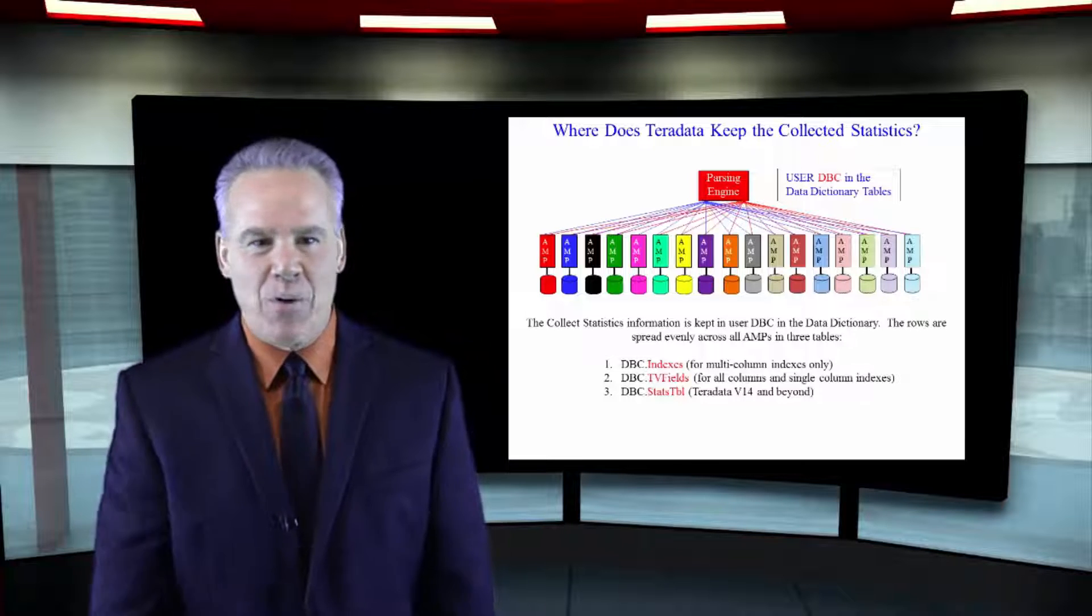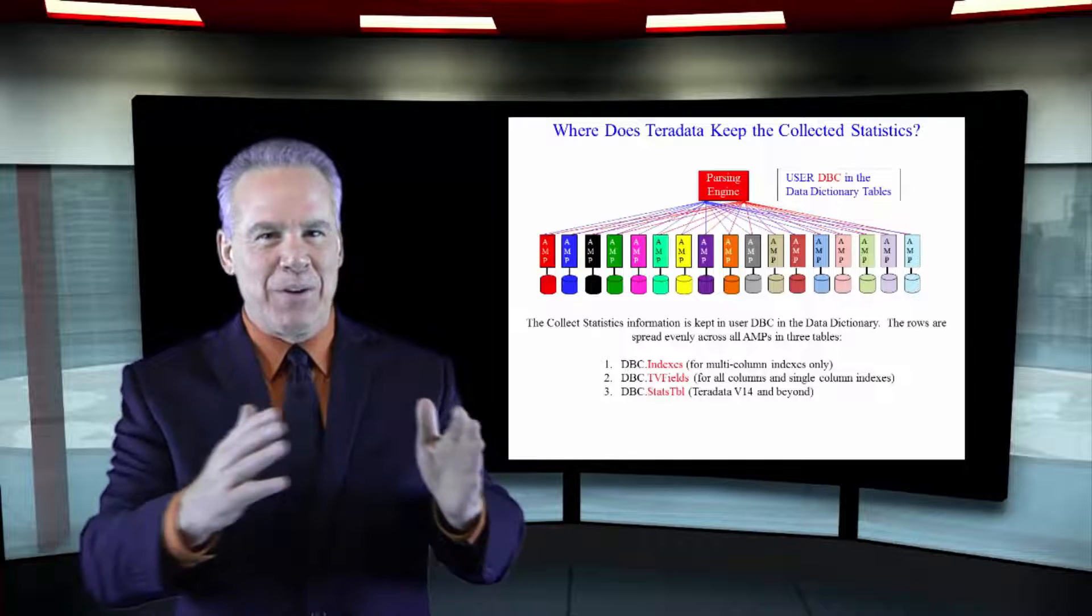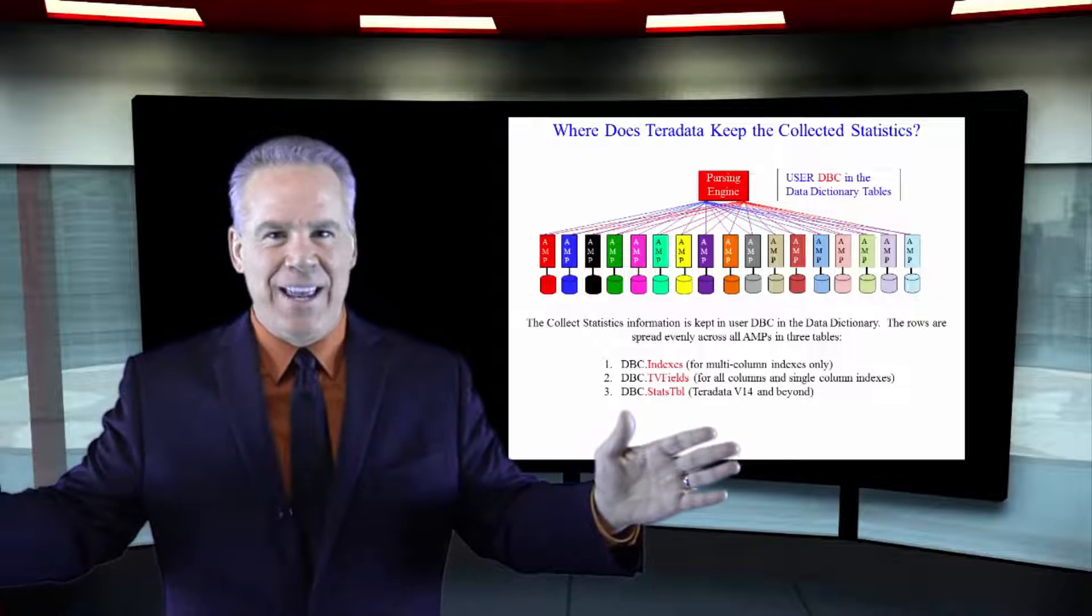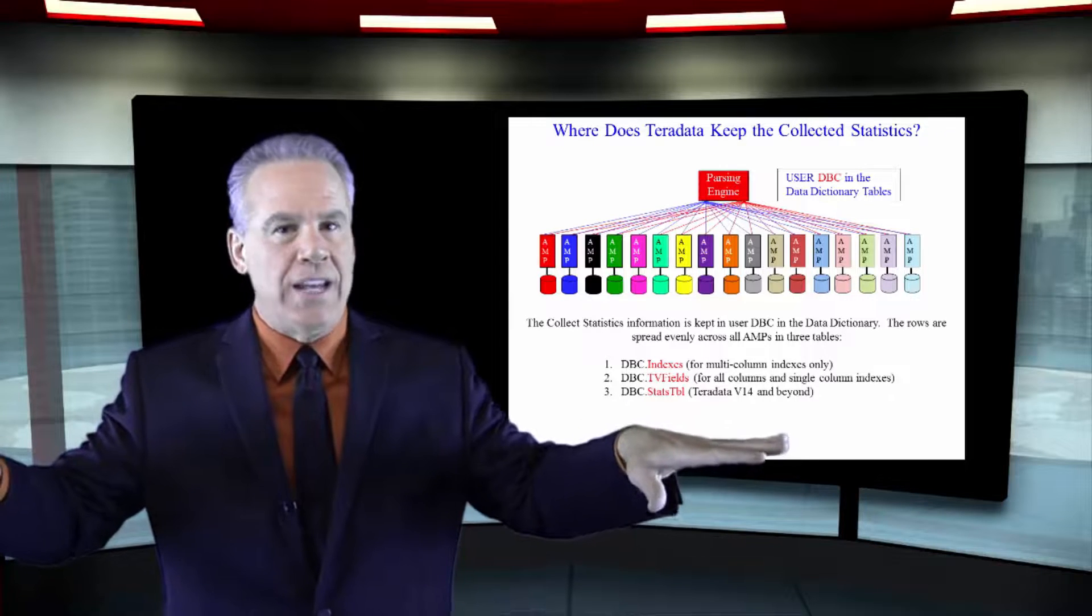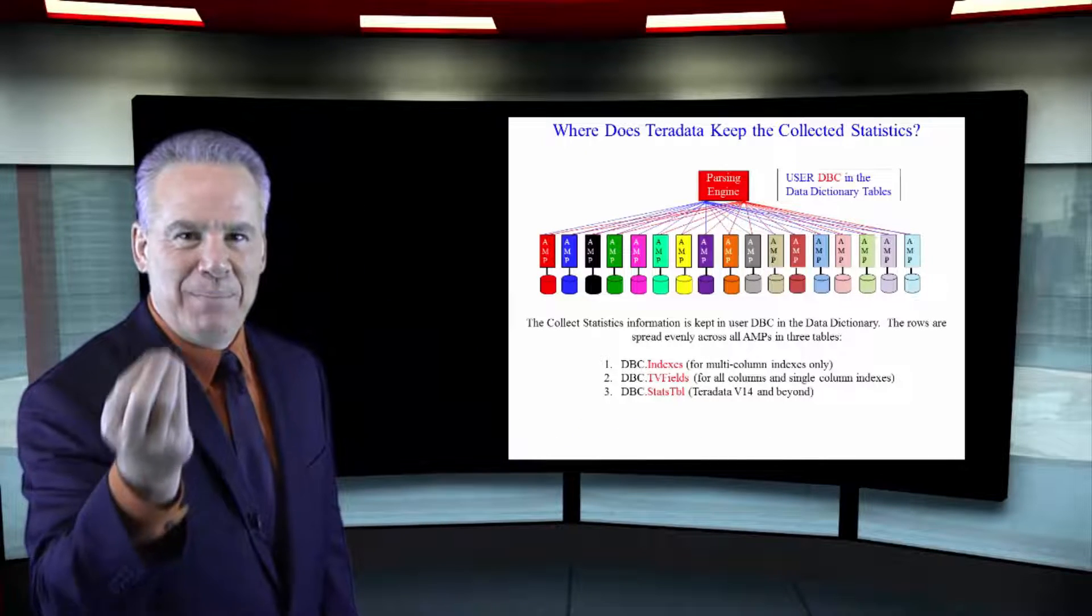Now, just like any table, they're going to take the rows and spread them across the AMPs for the parallel processing capabilities, but that's where it's stored in the data dictionary in DBC.